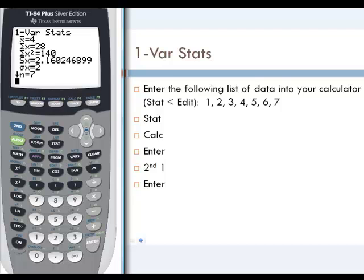And it will give us X bar, which is both our population mean and our sample mean, the sum of the X values, the sum of the X squared values, Sx, which is our sample standard deviation, Sigma X, which is our population standard deviation, and N, which is the sample size.